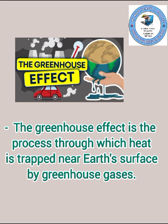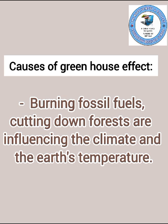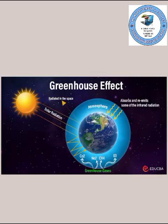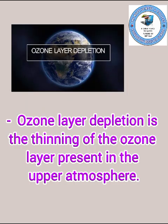Second is the Greenhouse Effect. It is a process through which heat is trapped near Earth's surface by greenhouse gases like carbon dioxide. Causes include burning fossil fuels and cutting down forests, which influence Earth's temperature and climate. Effects include increased flooding, desertification of fertile areas, and melting of glaciers. This diagram represents the whole greenhouse effect — more solar radiation reaching Earth makes it warmer.